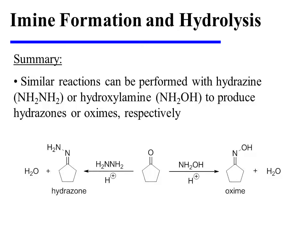It's also worth noting that similar reactions can be performed with related reagents to generate products that look like imines but contain slightly different functional groups. For example, cyclopentanone could be treated with hydrazine in the presence of gentle acid catalysis, and the imine-like product that is formed is known as a hydrazone, because it bears an additional amino group on the imine-type nitrogen. Alternatively, cyclopentanone can be treated with hydroxylamine in the presence of gentle acid catalysis, producing an imine-like compound known as an oxime, because it possesses an additional hydroxyl group on the imine-type nitrogen.